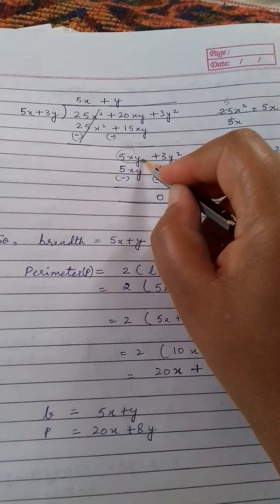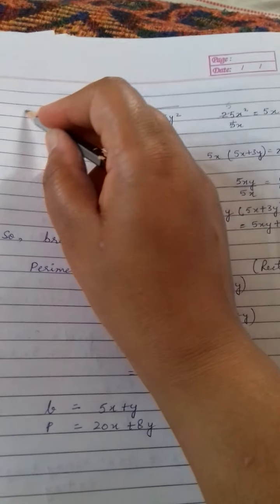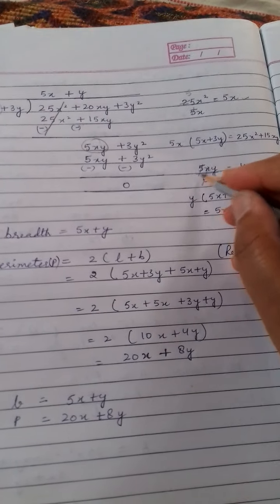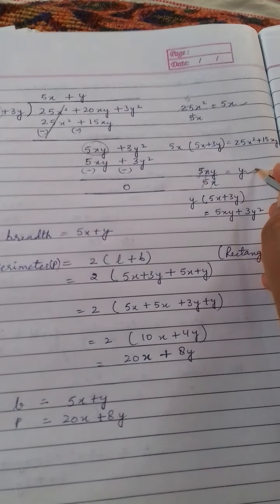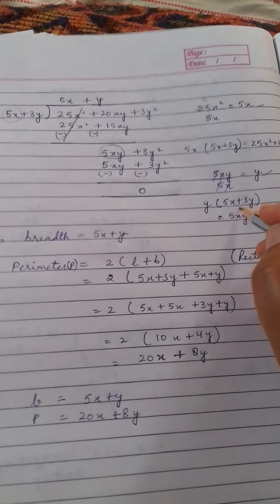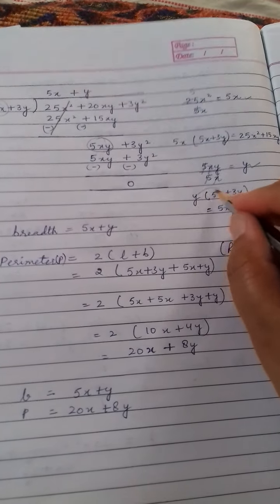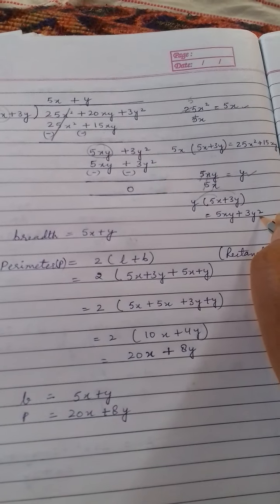Again, divide the first term of the dividend by the first term of the divisor. So 5xy upon 5x. X cancel x, 5 cancel 5. So we will get y. Now multiply this y with 5x plus 3y. What you will get? 5xy plus 3y square.